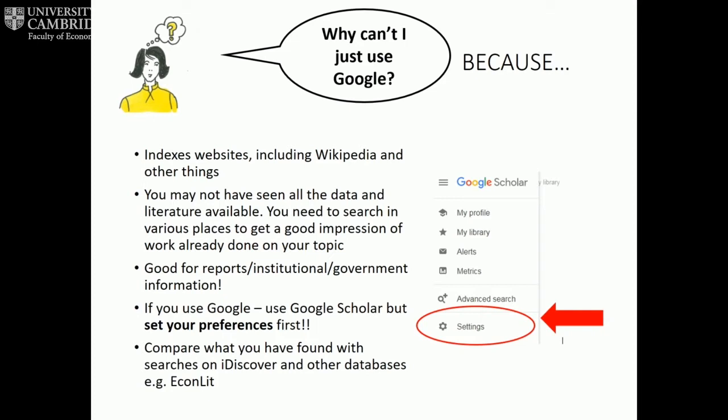When would it be perfectly acceptable to use Google? If you're looking for everything the OECD is publishing, a non-governmental organisation, or you want to go to the government website to see what they're saying about a particular issue — in economics that might be something you do need to do for your essay to see what the latest strategy, policy, and planned laws might be. But all I'm saying is it's not the only way.